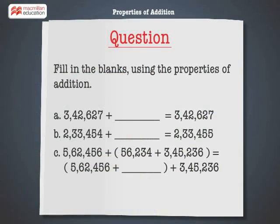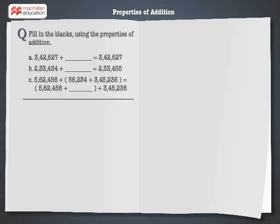Fill in the blanks using the properties of addition. Let's solve the first problem. 3,42,627 plus dash is equal to 3,42,627.